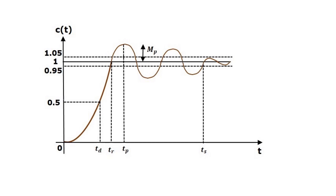Delay time is the time taken to reach 50% of the final value. Rise time corresponds to 100%, and peak time is the time taken to reach the peak value of the output. Settling time is when the system output settles within a predetermined tolerance band. The time required for that is called settling time. Now we will see the definitions one by one.